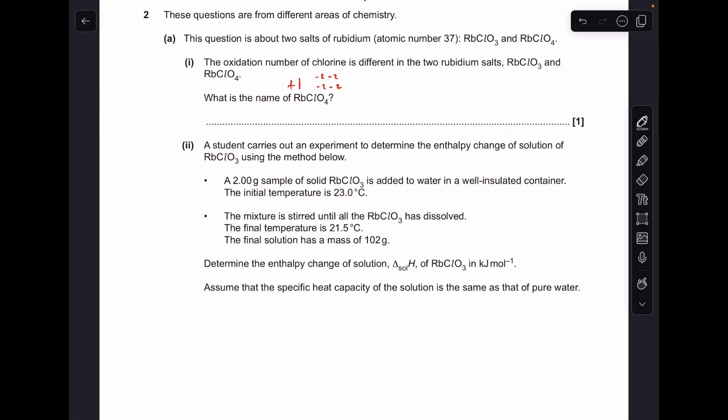Part A, what's the name of RBCLO4? So you can see I've already put in some oxidation numbers. So rubidium's in group 1 so it's plus 1 oxidation number for that and you've got 4 oxygens each one at minus 2. So basically what oxidation number does the chlorine need to be to keep the whole thing neutral and it's got to be plus 7. So the name of this is going to be rubidium chlorate, not chloride, Roman 7, VII.